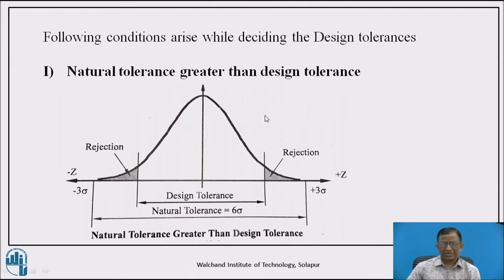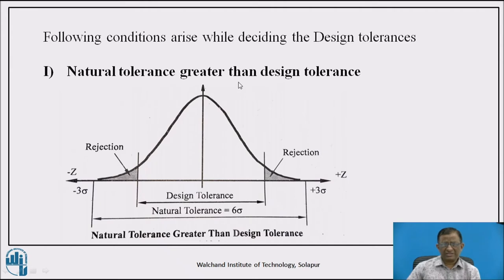The design tolerance is set arbitrarily as a variation limit — an upper limit and a lower limit of dimensions or specified characteristics set by the designer because of functional, economic, and manufacturing process constraints. The natural tolerance refers to the process capability. The first condition is that the design tolerance is less than the natural tolerance — meaning the process capability tolerance available is greater than what is restricted by the designer.